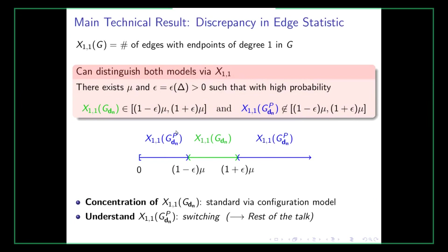If the number of 1-1 edges is in the interval, then it's the uniform model; if it's not in the interval, then it's the DN process graph. Showing concentration for the number of 1-1 edges in the uniform model is really a standard thing. You look at the configuration model, establish the relevant concentration there — for example by a second moment argument — and then transfer this result to the uniform model. This is standard in this field and we will not get into it.